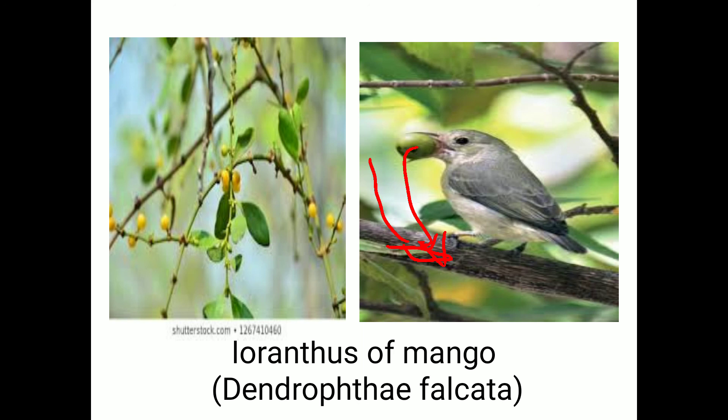The growth of the main plant becomes stunted, and the plant shows yellowing and drying of leaves. At the point of infection, a gall-like structure is also formed. These are the symptoms of Loranthus of mango.